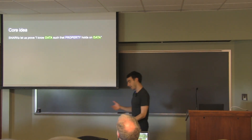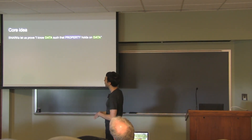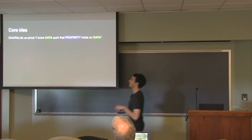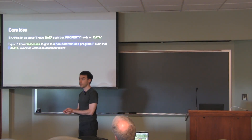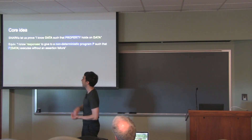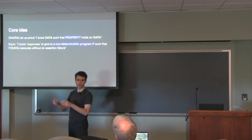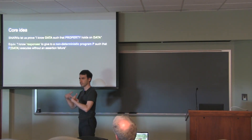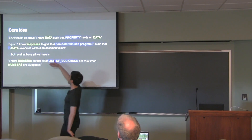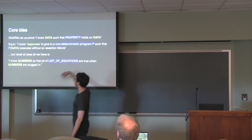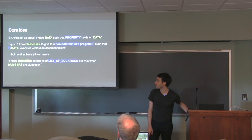The core idea driving the Snarky language is: to prove 'I know data such that property holds on that data' is the same thing as saying 'I know responses to give to a non-deterministic program P such that P executes without an assertion failure.' Those are the same thing. But at the end of the day, all we have is 'I know numbers so that all of some list of equations are true when numbers are plugged in,' so we'll have to translate this into that world of lists of equations.